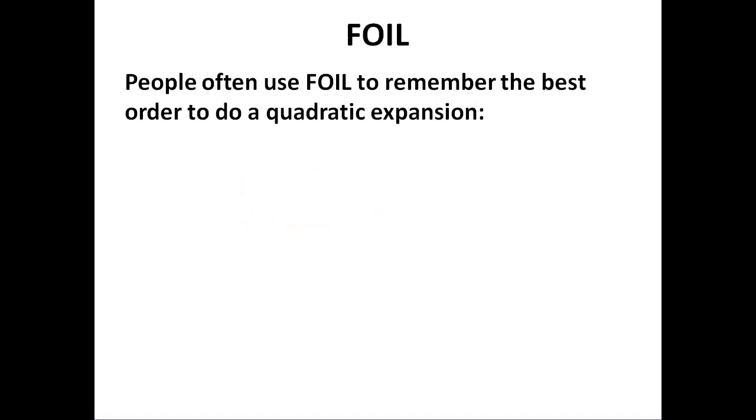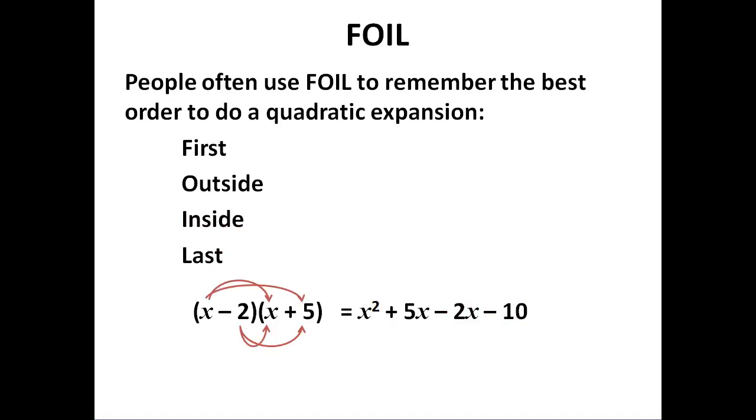People use FOIL to remember how to do a quadratic expansion: First, Outside, Inside, Last. We multiply our first terms, our outside terms, our inside terms—notice this is minus 2 times x—and last, minus 2 times 5 is minus 10. Then at the end we simplify it. Because we've used FOIL, it's always the middle two terms we combine.